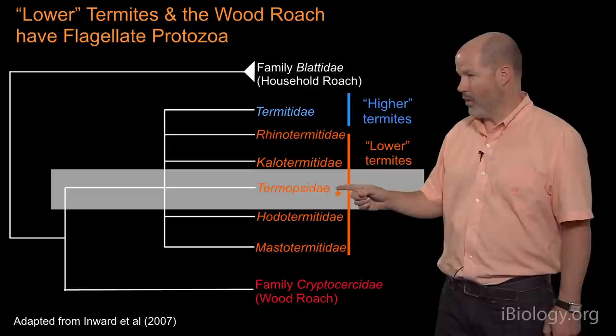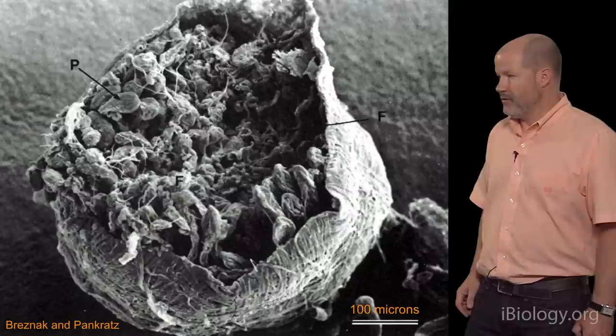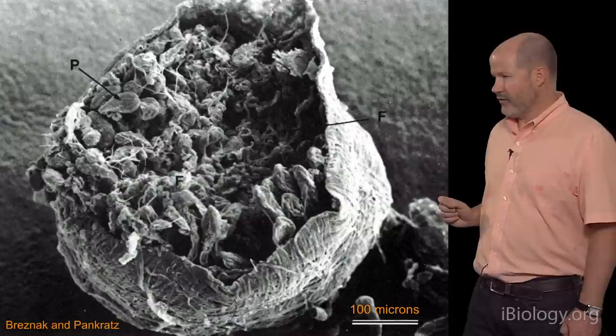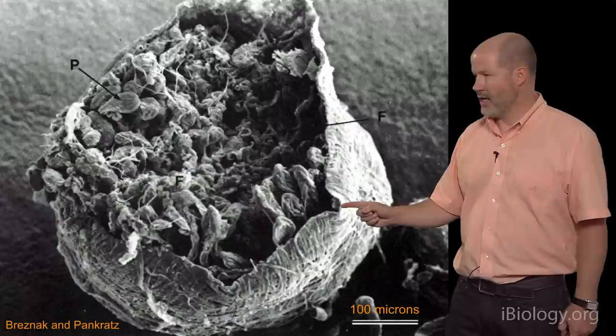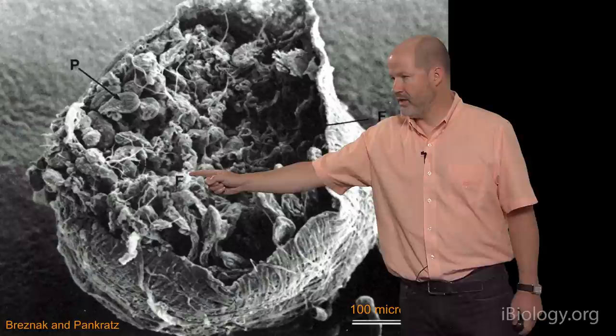The termite I study, Zootermopsis, belongs to the group Termopsidae. If you extract the gut from Zootermopsis and take a cross-section through that gut, you'll see that the insect tissue itself is very, very thin — only about 10 microns in diameter, so 1% of a millimeter in thickness. The bulk volume is comprised by the gut contents.